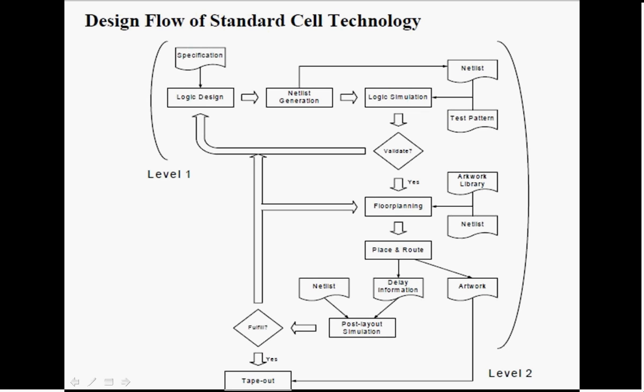And we move on to floor planning. It is supposed to allocate the area of silicon. Next, place the selected cell on the allocated area and connect them with metal routing. Finally, fabricate the design to chips.